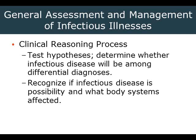We will test our hypotheses and determine whether an infectious disease will be among our differential diagnoses. Some calls come in as shortness of breath — which could be CHF, COPD, pneumonia, or bronchitis. We have many possible diagnoses, and it's up to us to use our advanced level reasoning to pick them apart. Recognize if an infectious disease is a possibility, and determine what body systems it might affect.